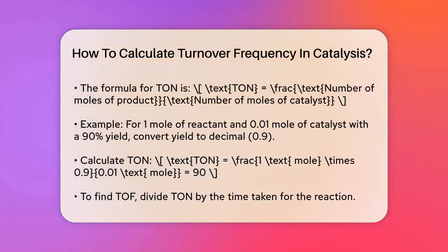Then, use the formula: TON equals one mole times 0.9 divided by 0.01 moles, which equals 90.